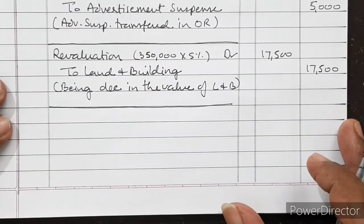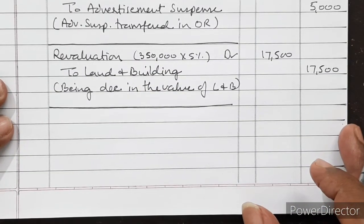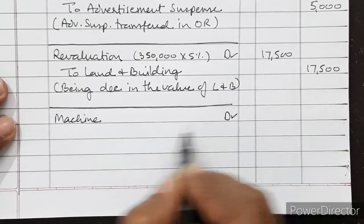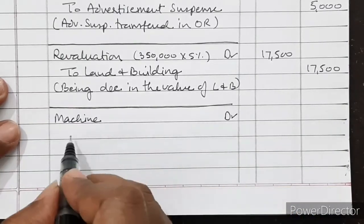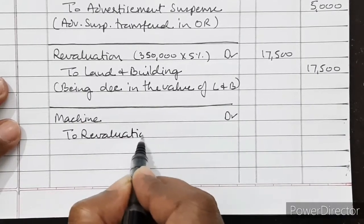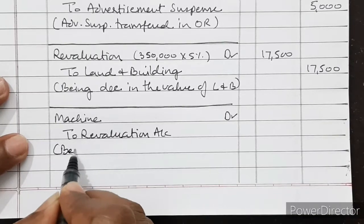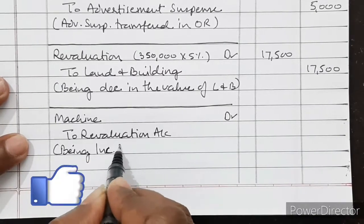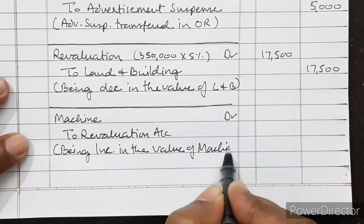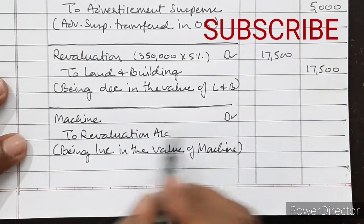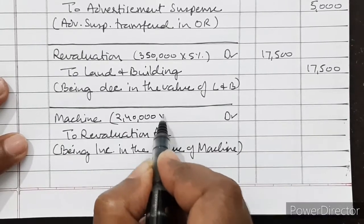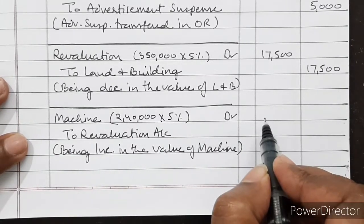Value of machinery is increasing by 5%. So Machine Account debited to Revaluation Account — increase in value of machine. Machinery value is Rs. 2,40,000, and 5% is Rs. 12,000. Being increase in the value of machine.